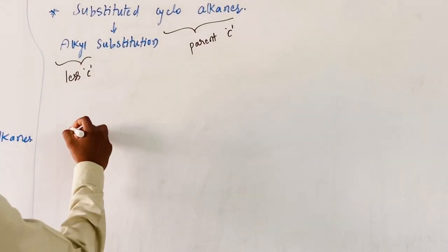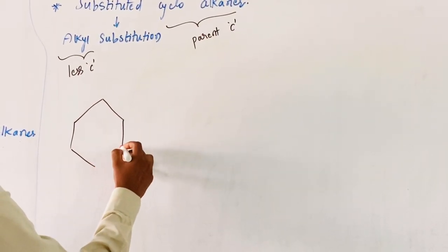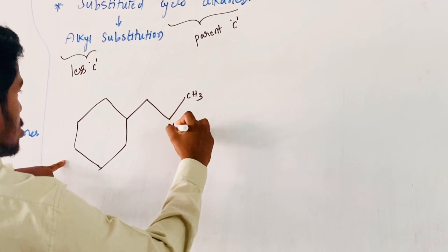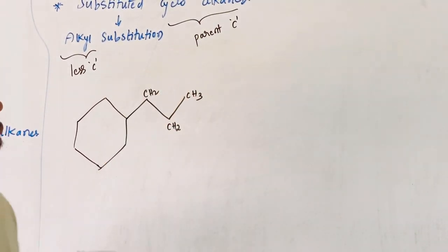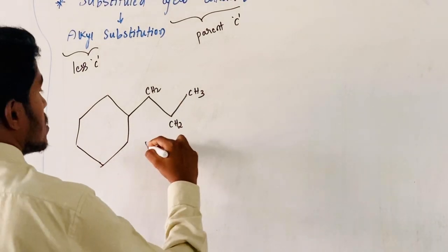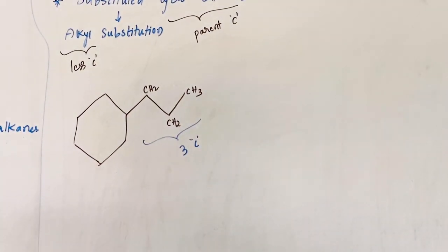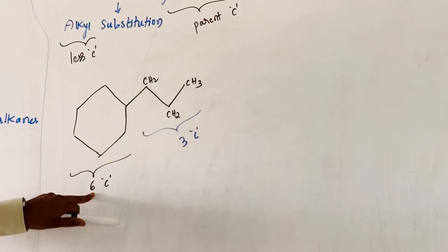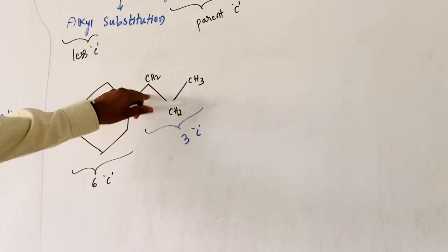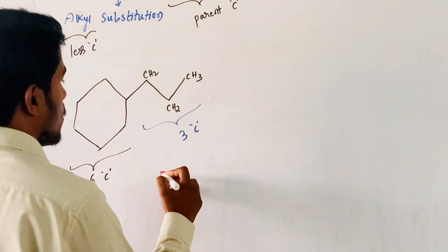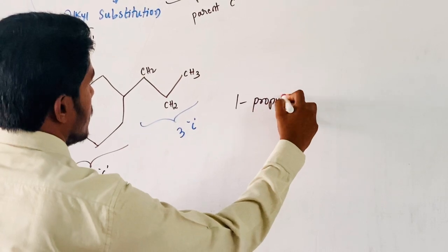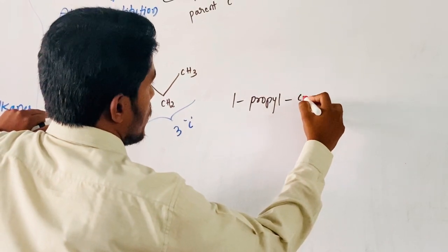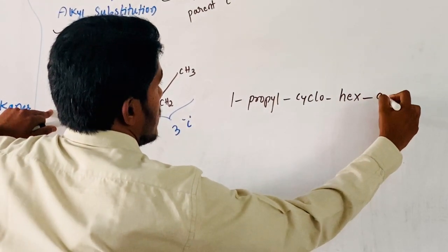For example, consider a six-membered ring with a substituent CH3-CH2-CH2. The substituent has three carbon atoms and the ring has six carbon atoms. Since the ring has more carbons, it is the parent chain and the substituent is the alkyl group — in this case, propyl. The name is 1-propylcyclohexane.